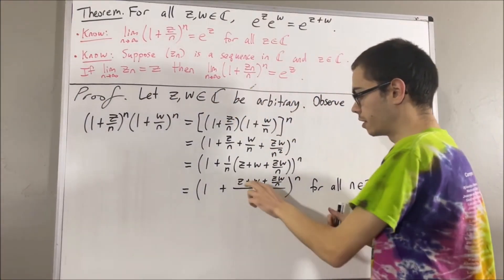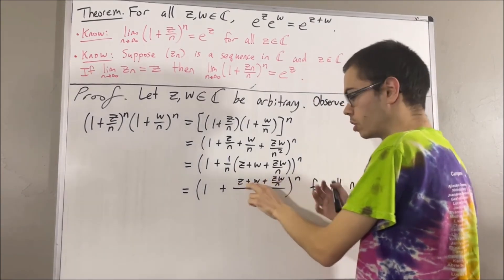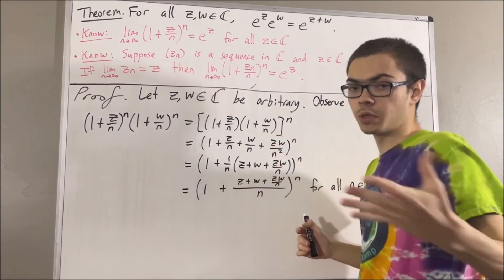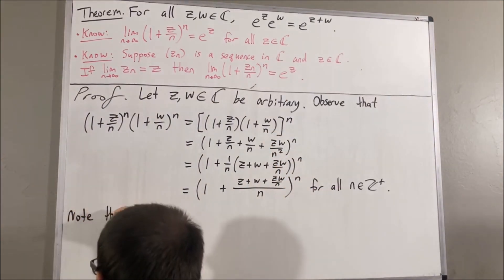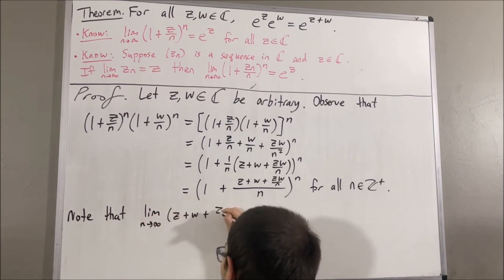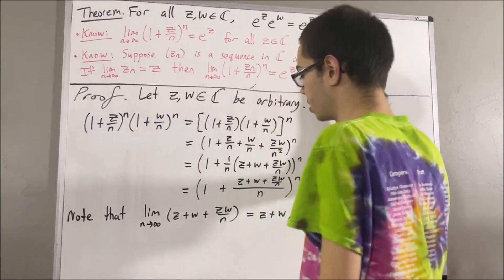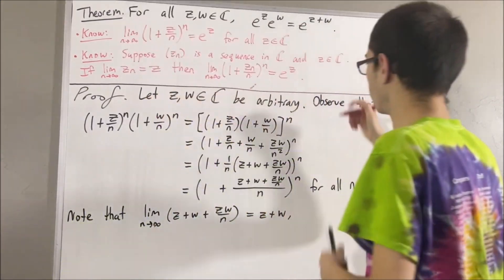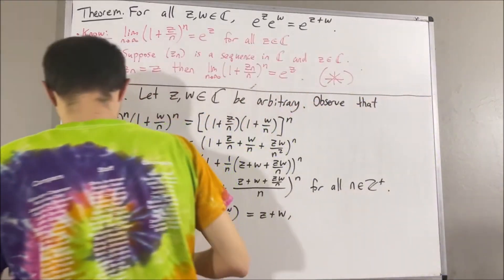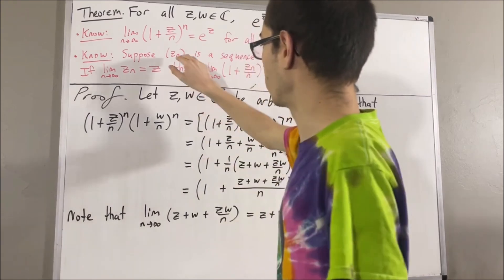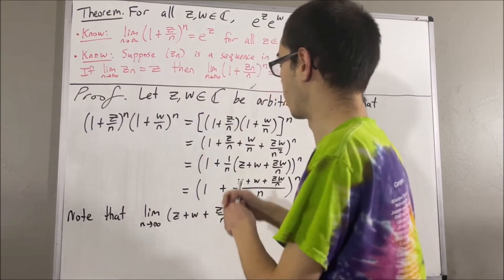Now notice the limit of the sequence z plus w plus zw over n is equal to z plus w, because as n goes to infinity, zw over n goes to 0. So now we apply our preliminary result, which I'll call star. Applying our preliminary result, we take the sequence of complex numbers z_n to be z plus w plus zw over n.